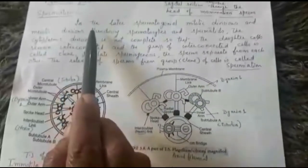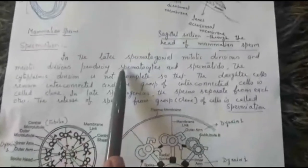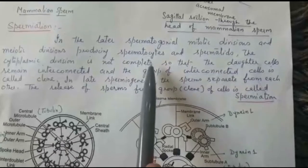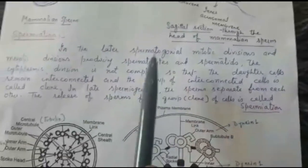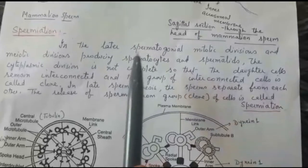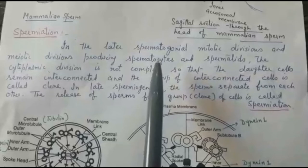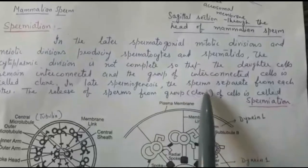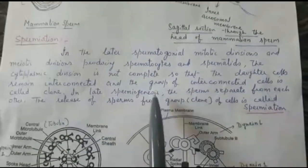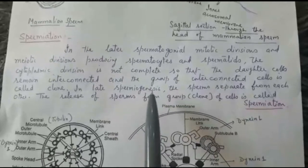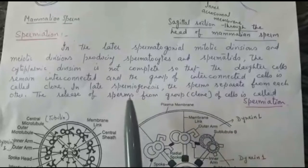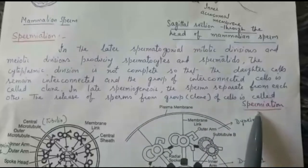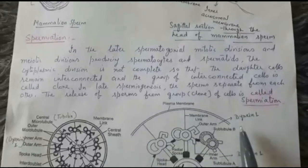Another important term is spermiation. The sperm mother cell undergoes mitotic division to form spermatogonia, then meiotic divisions to form primary and secondary spermatocytes. During these divisions, cytokinesis — division of cytoplasm — is incomplete, so all daughter cells remain connected, forming a group called a clone. Only in late spermiogenesis do sperms separate from each other. The process of release of sperm from the clone of cells is known as spermiation.